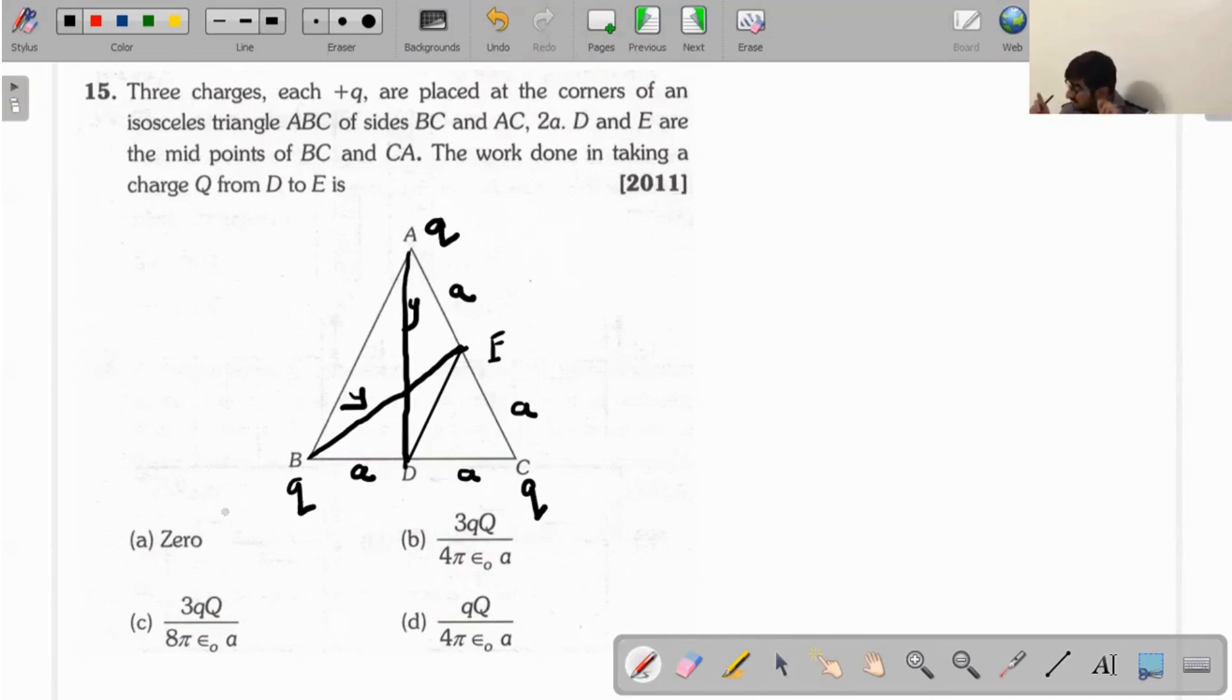It is because charges are same on all three vertices. Because D and E are midpoints in an isosceles triangle with equal length sides, points D and E relative to the vertices will be at the same distances. Charges Q at distance a and Q at distance y - the potential will be the same at both points.